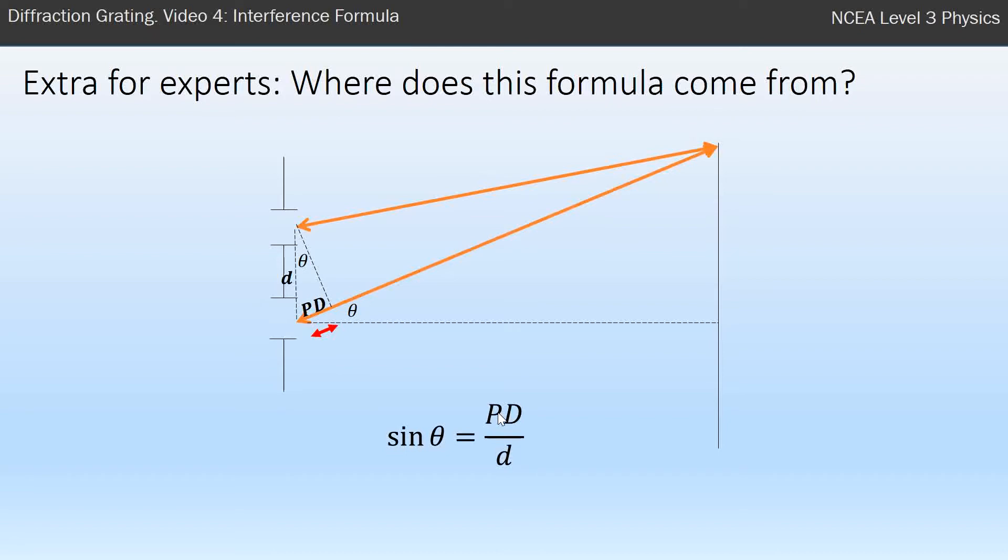And so when you do SOHCAHTOA, I've got distances on the hypotenuse. Path difference is the opposite. It's opposite over hypotenuse. We get sine theta equals this.